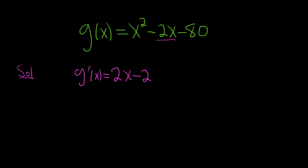It's not undefined anywhere, so now we just set it equal to 0, right? Remember, critical numbers are numbers in the domain where the derivative is undefined or 0, so it's not undefined, so now we just set it equal to 0.